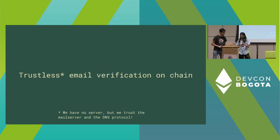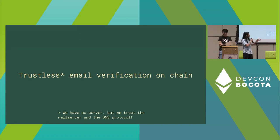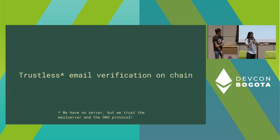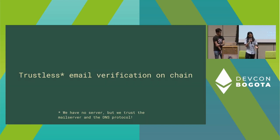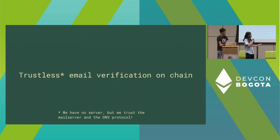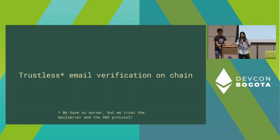Today we're going to talk about trustless email verification on chain. It's trustless in the sense that we don't run our own server, so we don't see any of your private data. At the same time, this is an interoperability protocol between web2 and web3 — we are trusting mail servers and DNS to be operating as they should, but we do not operate any of our own infrastructure.